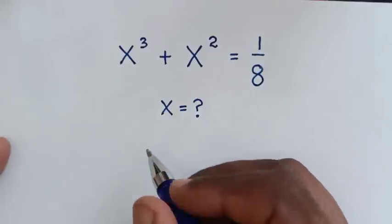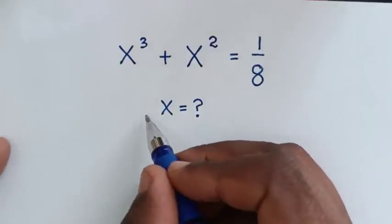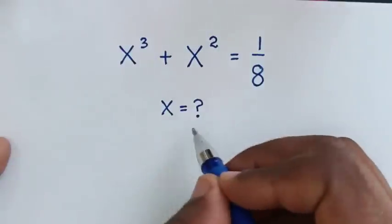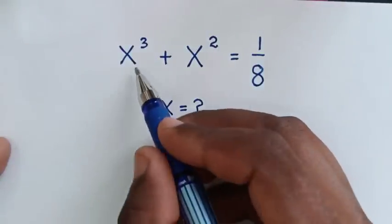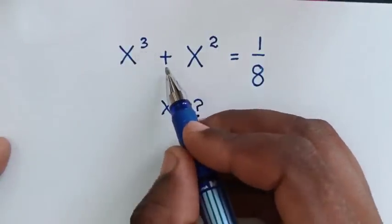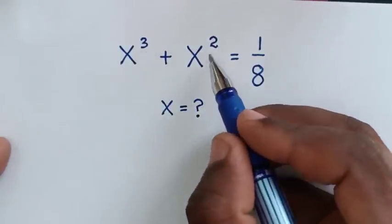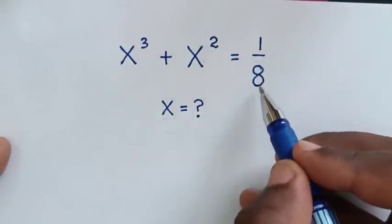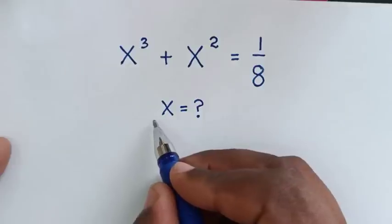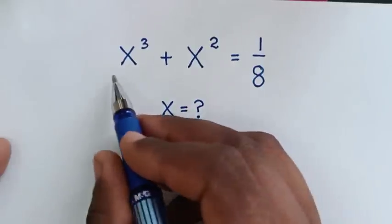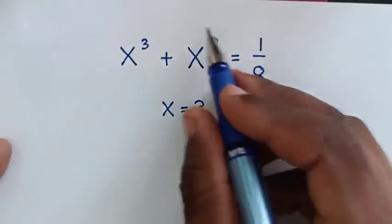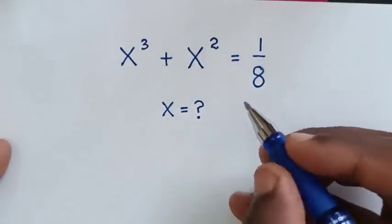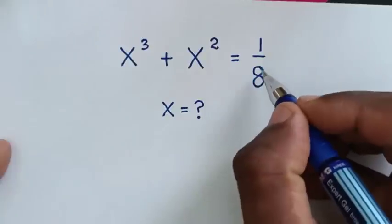Hello, you are welcome to solve this math problem which is x³ + x² = 1/8. We need to find the values of x from this equation. In the first step we remove the denominator of 8 by multiplying by 8 on both sides.